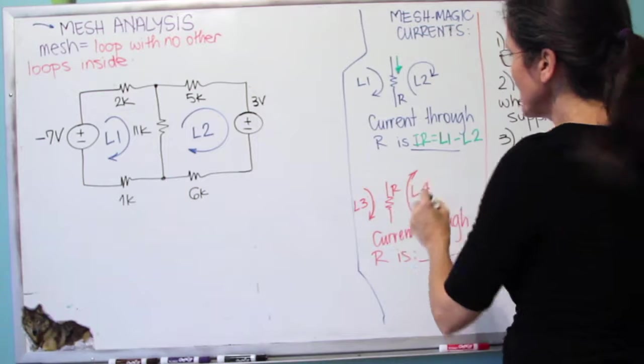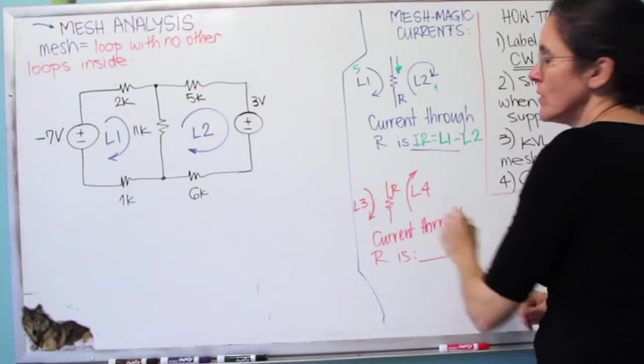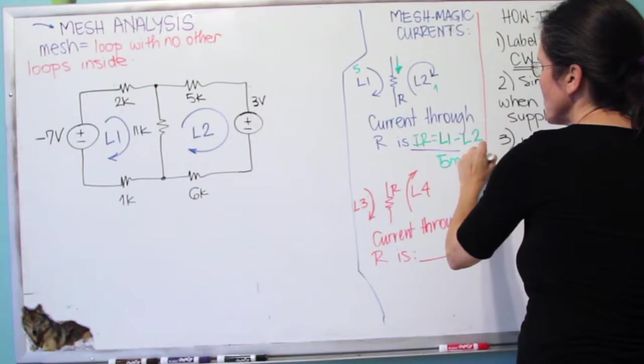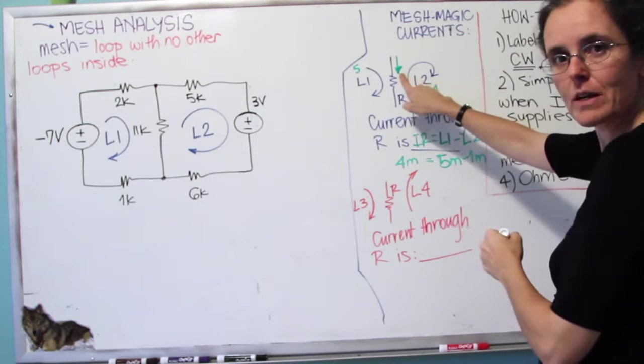So for example, if we have 5 milliamps on L1 and 1 milliamp on L2, it would be 5 milli minus 1 milli, and the current through the resistor would be 4 milliamps in this direction.